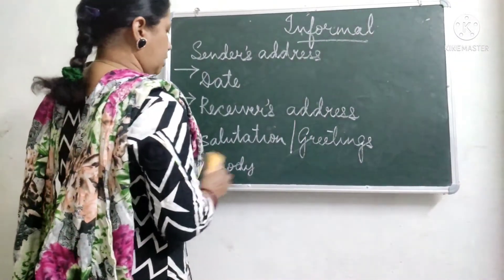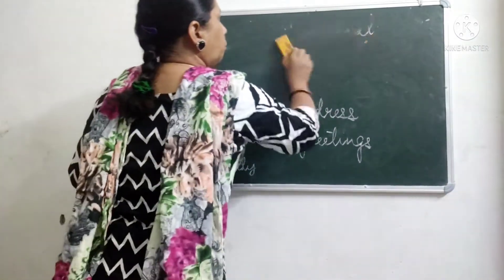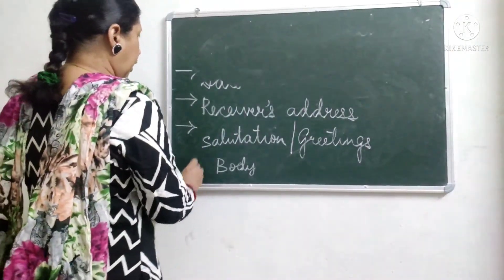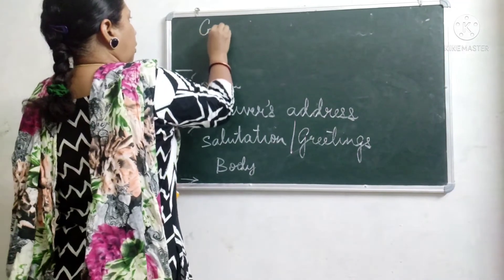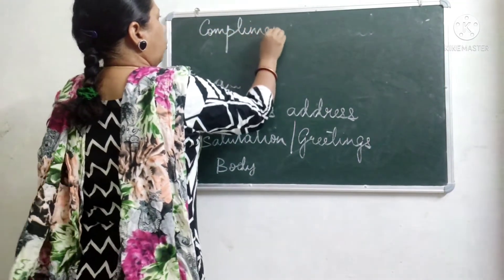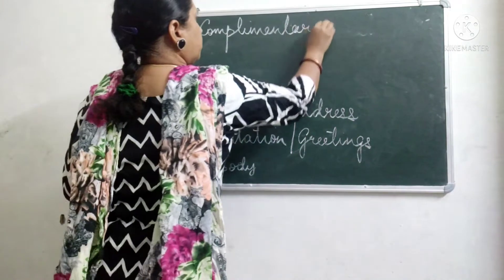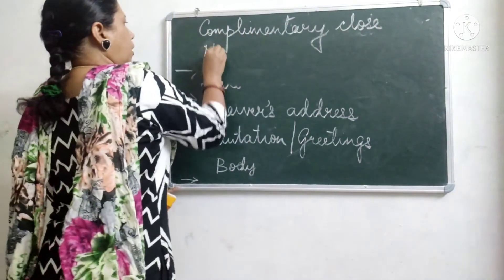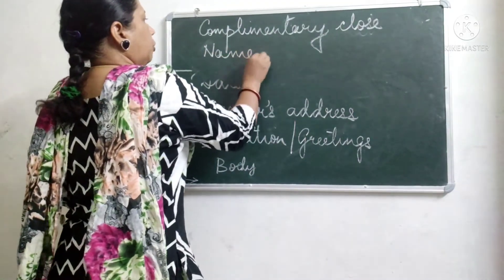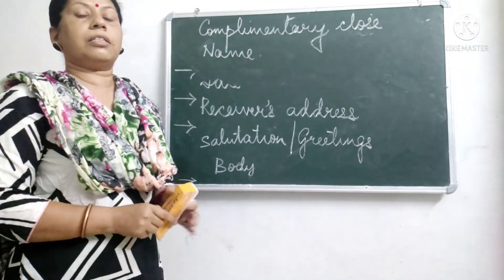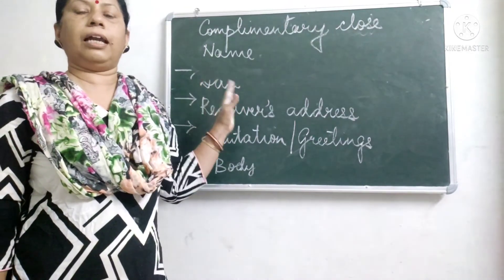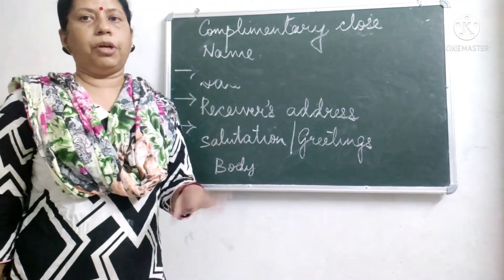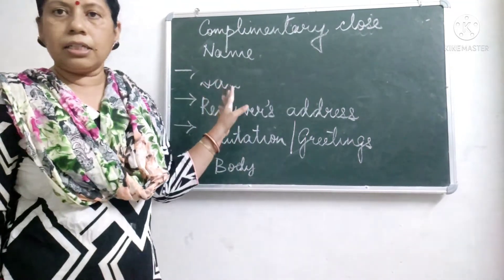Then after finishing your body you leave a line. Then you have your complimentary close, followed by your name. You should not write your surname. Remember this is your informal letter — your parents, relatives, everybody, and friends know your surname, so you need not write the surname.